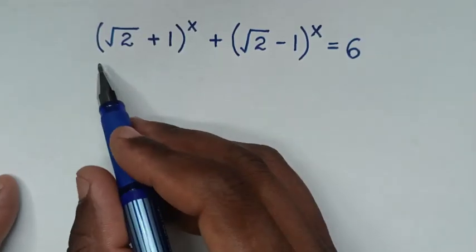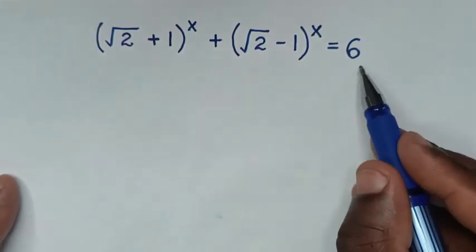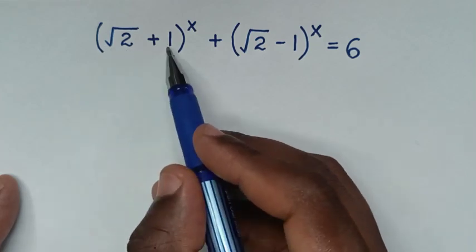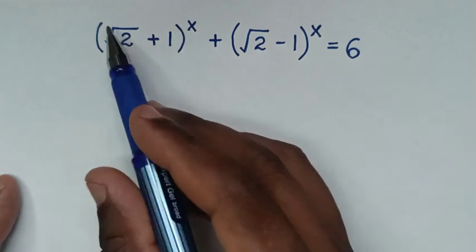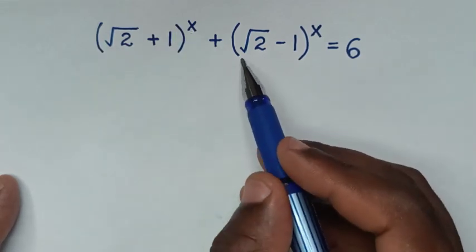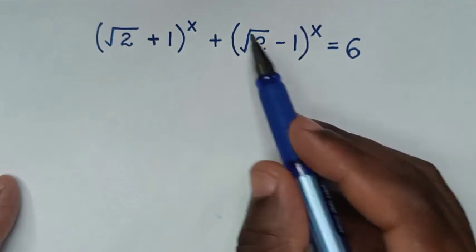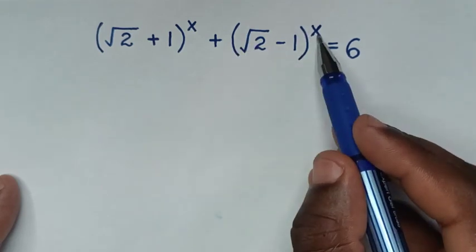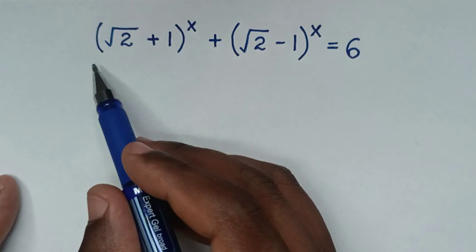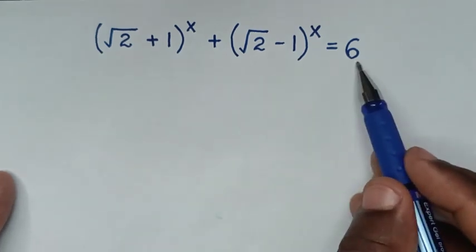Hello, you are welcome to solve this math problem, which is: square root of 2 plus 1, bracket, power of x, plus square root of 2 minus 1, bracket, power of x, is equal to 6. We need to find the values of x from this equation.